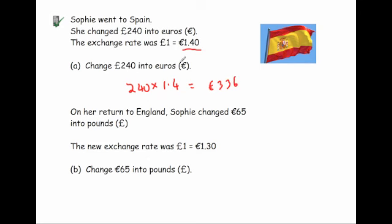On her return to England, Sophie changed 65 euros back into pounds. The new exchange rate was one pound equals 1.3 euros. To convert back from euros into pounds, we divide by 1.3. So 65 divided by 1.3 gives exactly 50 pounds. You can check this: 50 times 1.3 does equal 65 euros.